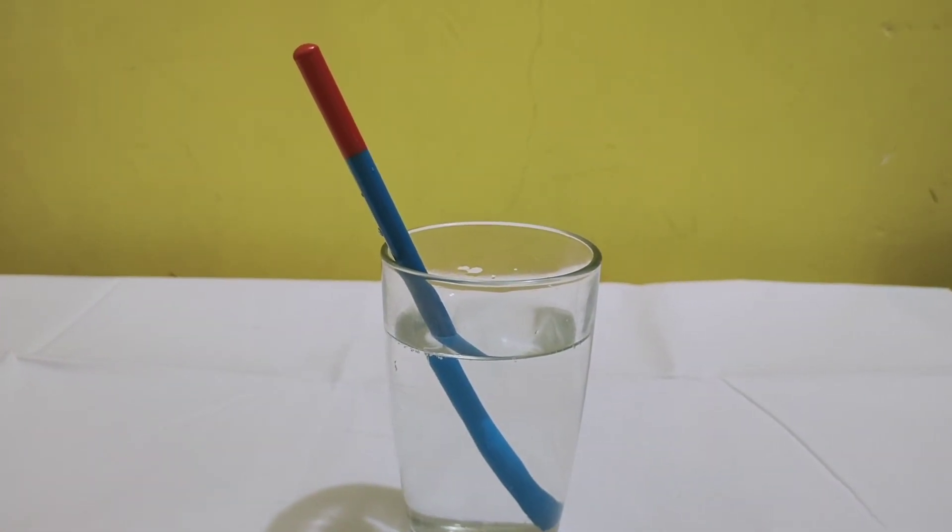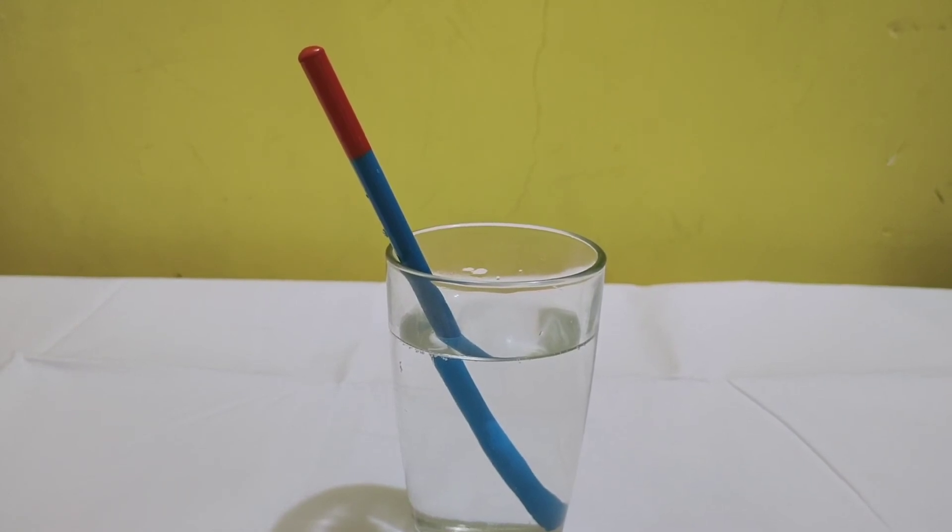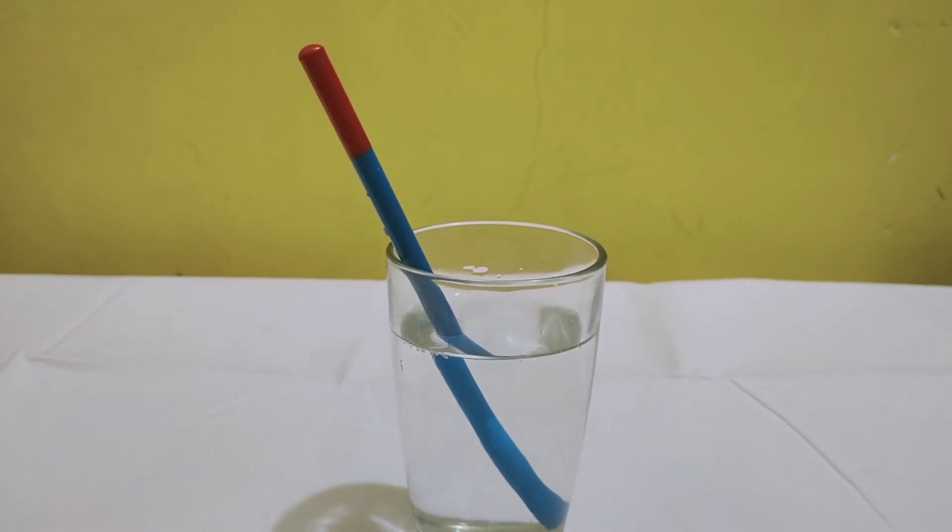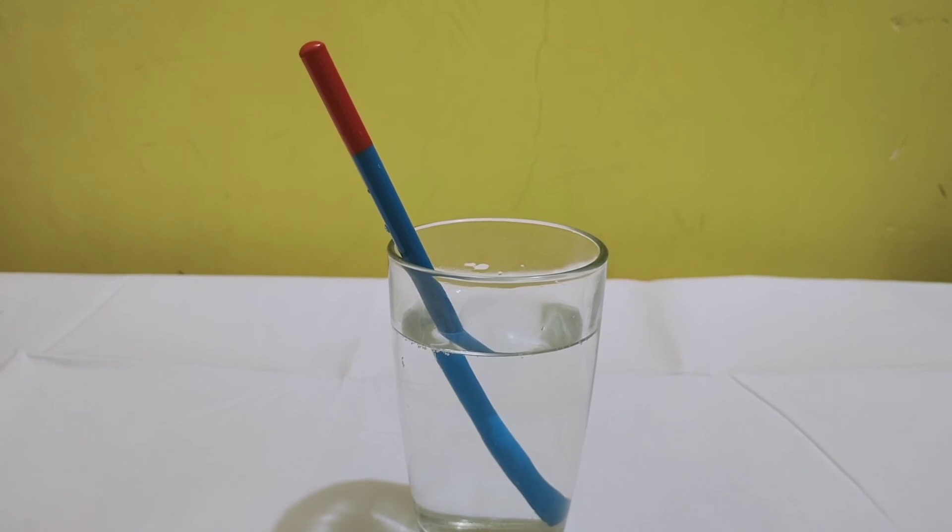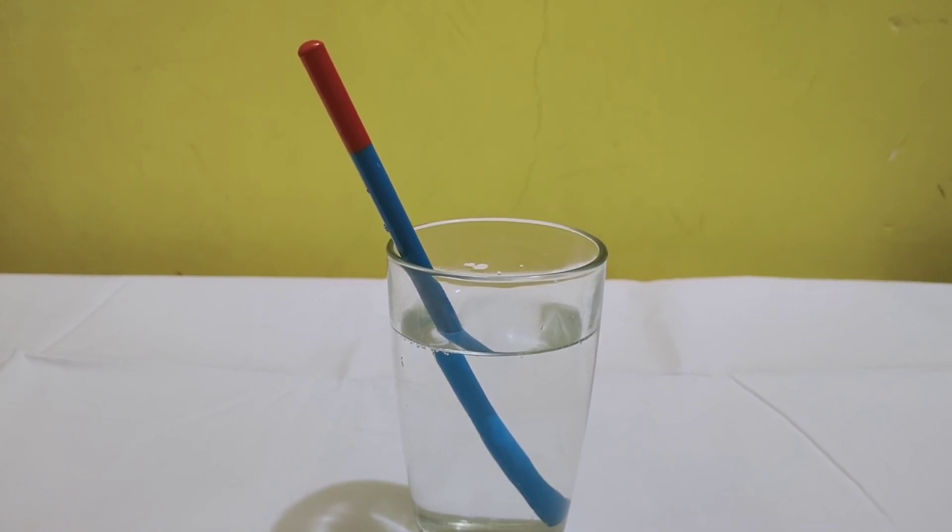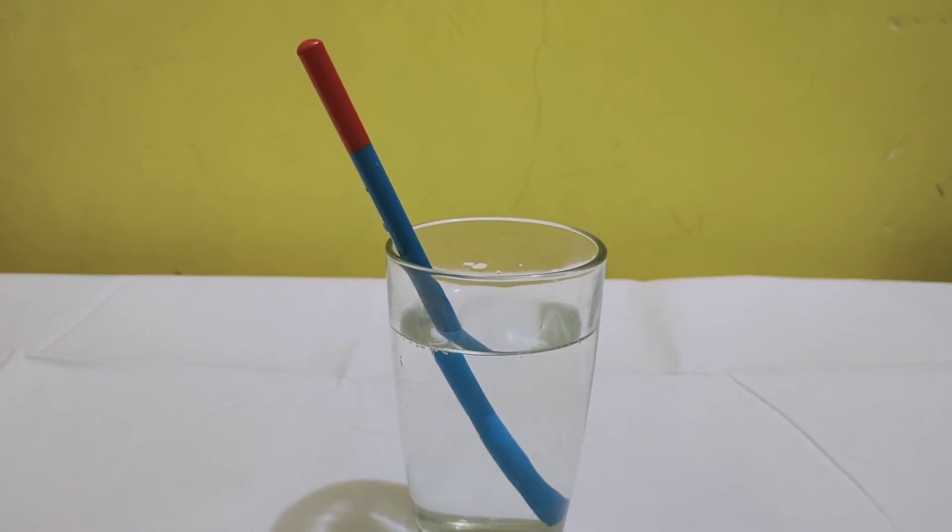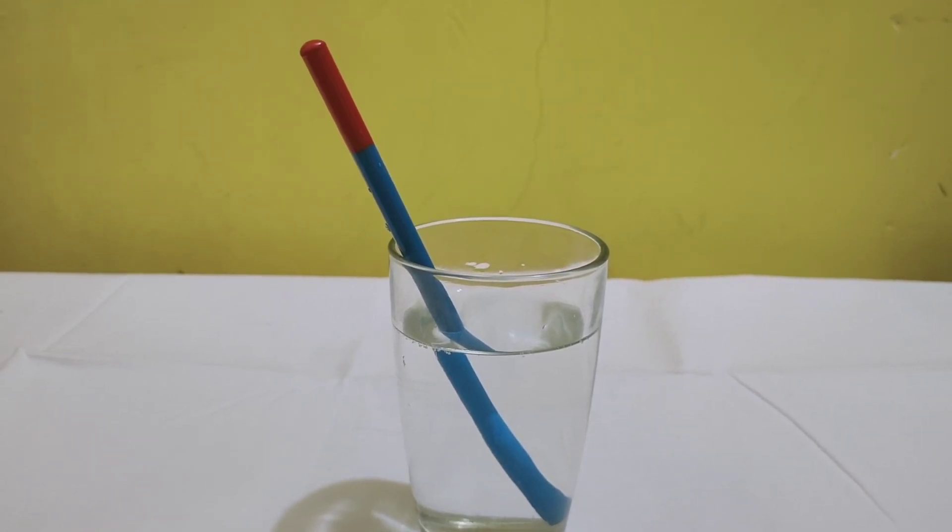Okay, so it is deviated a little. It is deviated from its straight line path, so the pencil appears to be bent when you see it through the glass of water.